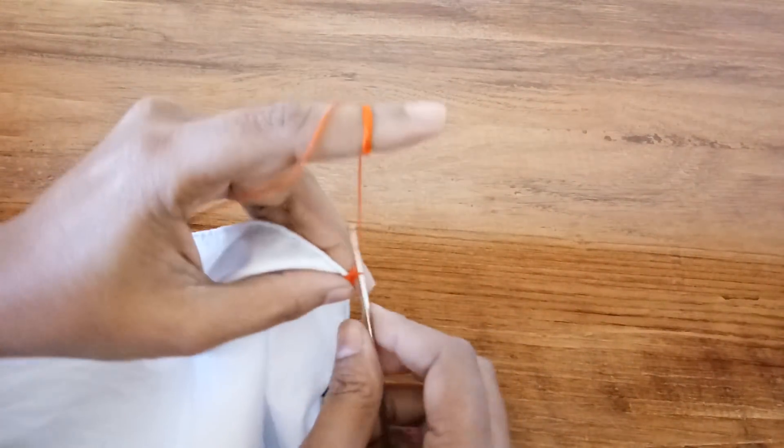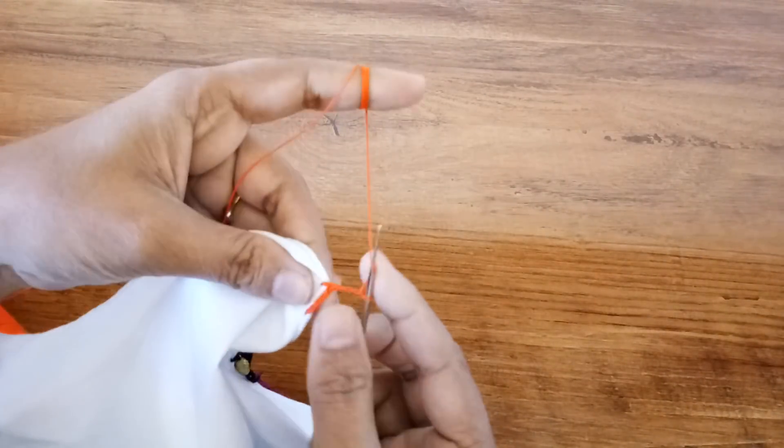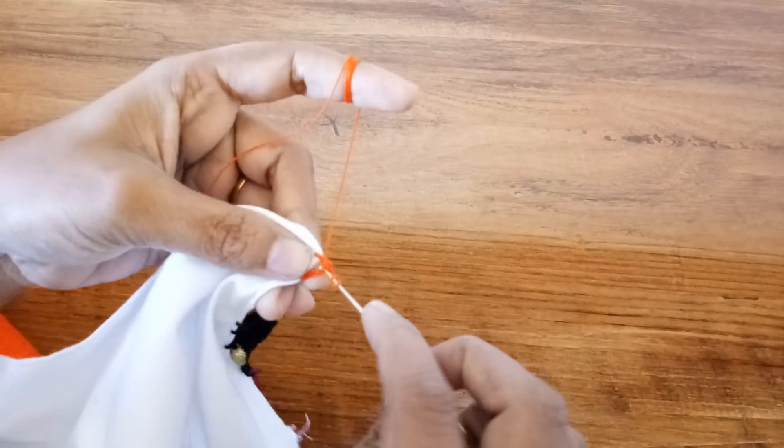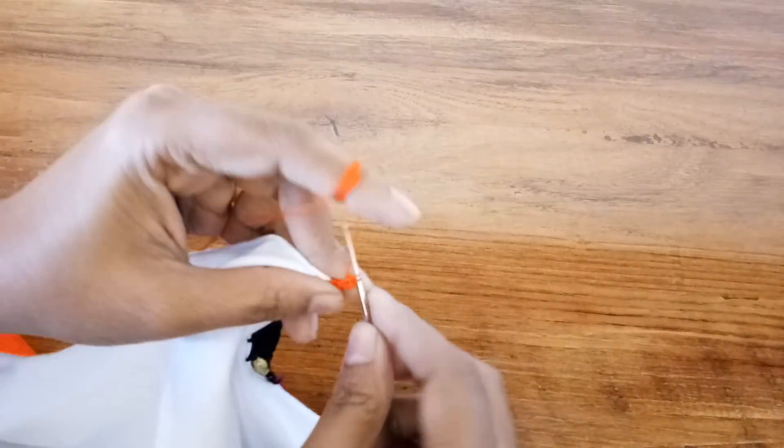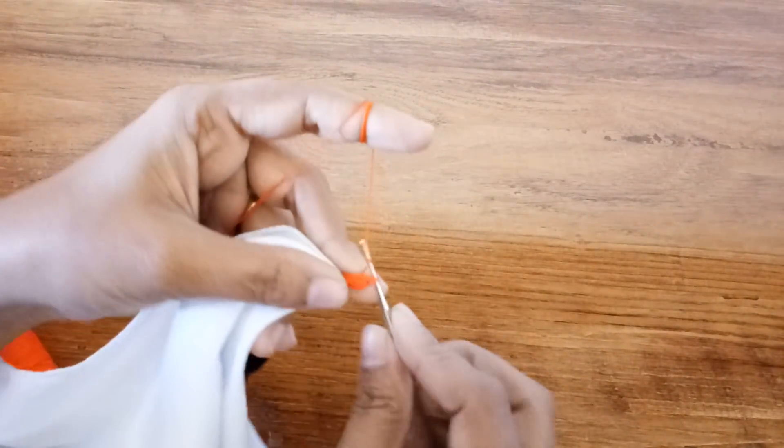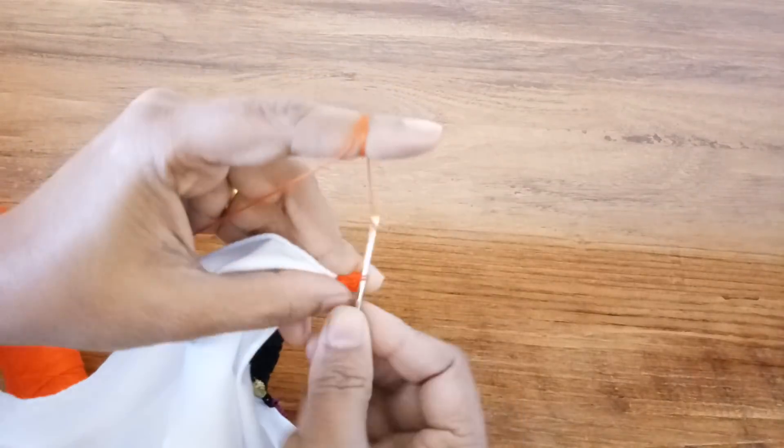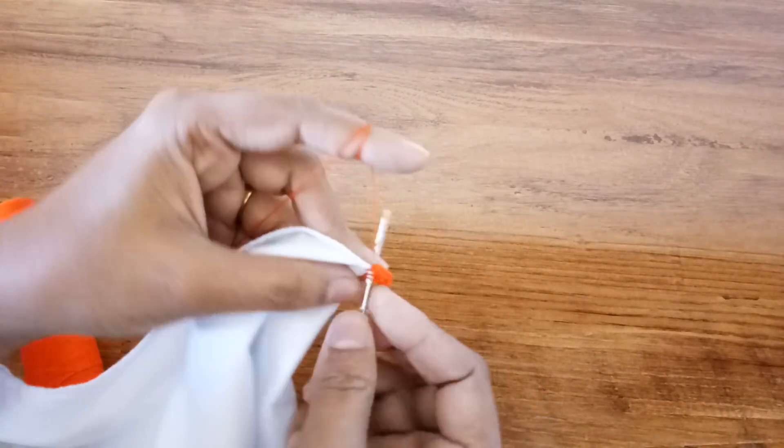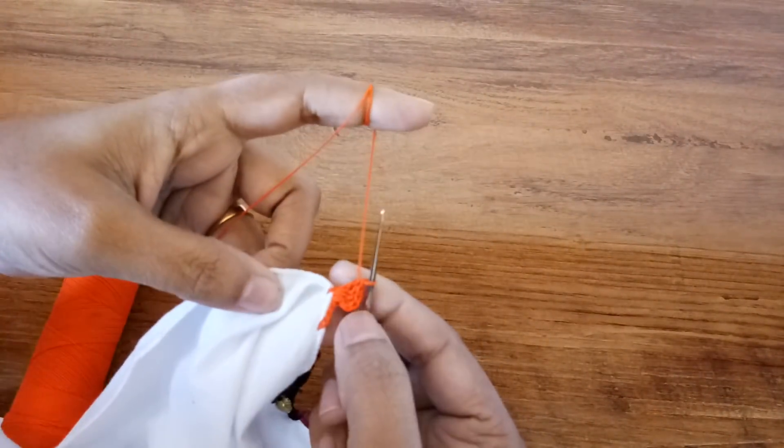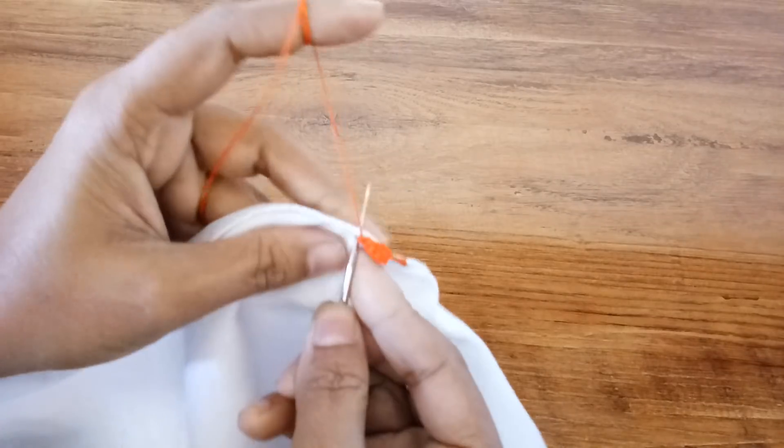Four double crochet. And now again make three chains: one, two, three. And make four double crochet into the gap here. One, two, three, four. So total we have five double crochets and just lock it to the cloth.